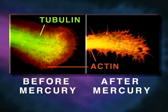Shown here is a neurite growth cone stained specifically for tubulin and actin, before and after mercury exposure. Note that the mercury has caused disintegration of tubulin microtubule structure.